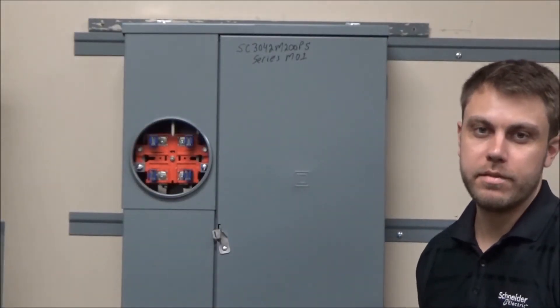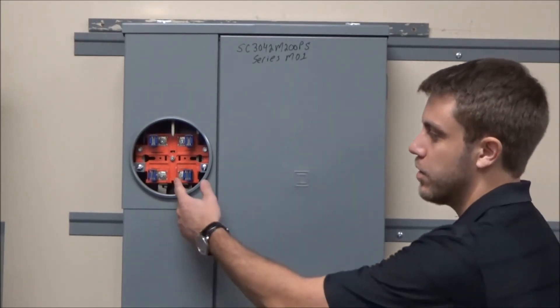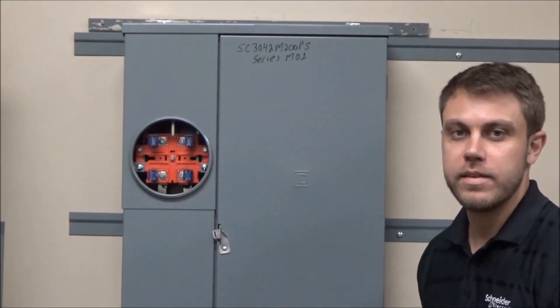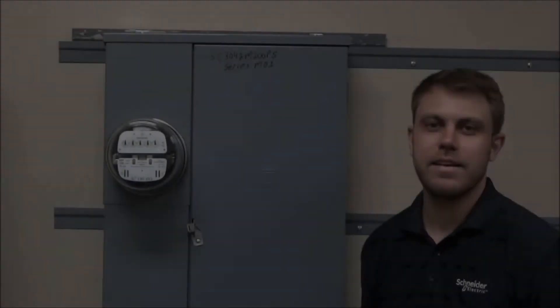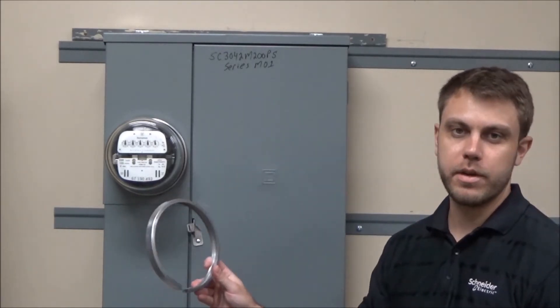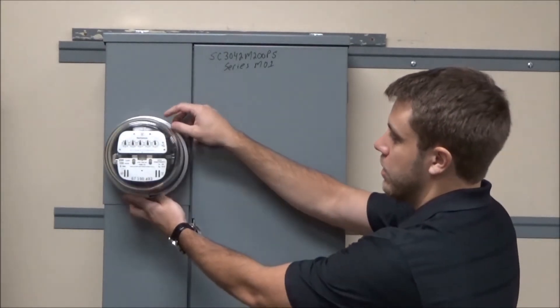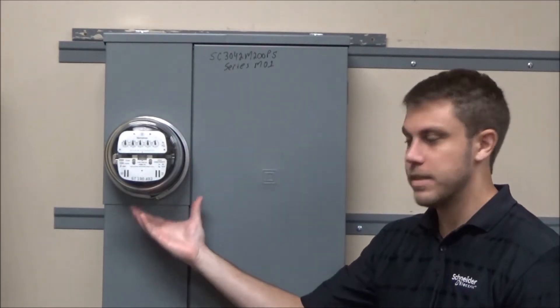In our ring type metering devices, the cover is first installed and secured to the meter socket base, then the utility company will install their watt hour meter. With the watt hour meter installed, the utility company will use their sealing ring to secure the watt hour meter to the lip of the cover and use that to seal it shut.